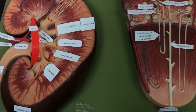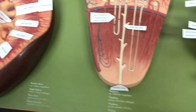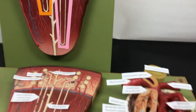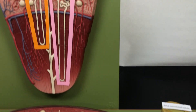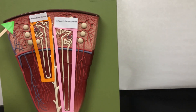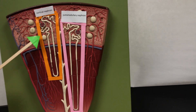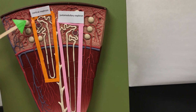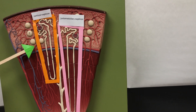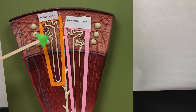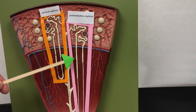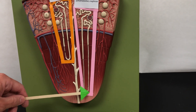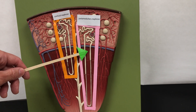The nephron is the functional filtration unit of the kidney. We have about one million nephrons in each kidney and there are two types: cortical nephrons, where the majority of the nephron is in the renal cortex, and juxtamedullary nephrons, which have long loops extending into the medulla.